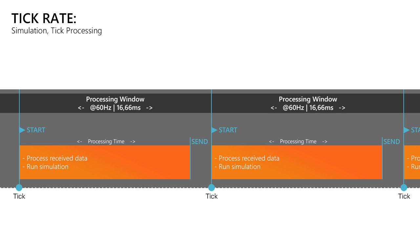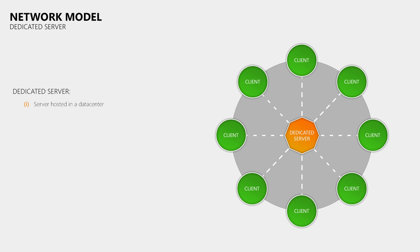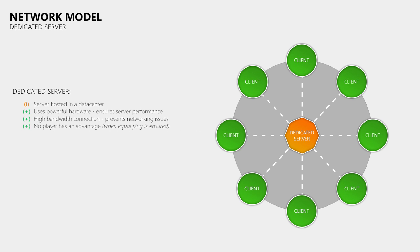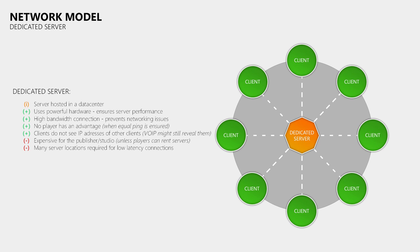Now what options do developers have when it comes to providing servers? One solution is that you pay hosters to set up dedicated servers in their data centers. This means your game server runs on powerful hardware and the data center has enough bandwidth to handle all the players. When matchmaking ensures all players have more or less the same ping to the game server, you can avoid unfair advantages. One downside is that the publisher or game studio has to pay for them, which is expensive. Another problem is that releasing worldwide means you also need enough server locations to provide low latency servers for all players — if you don't, you create high ping players which is a problem for your entire community.